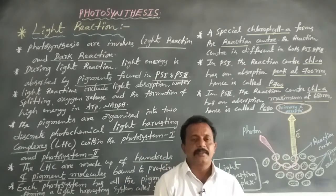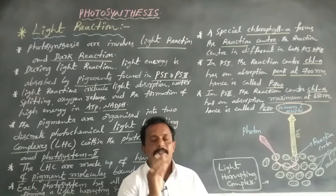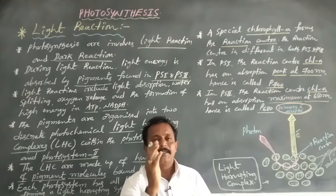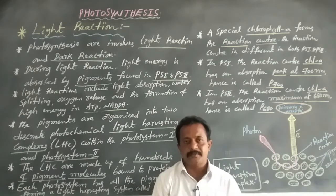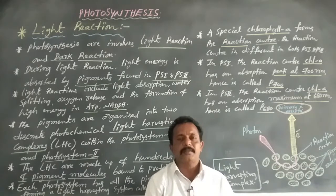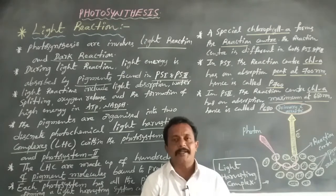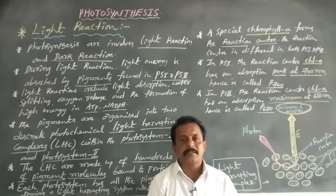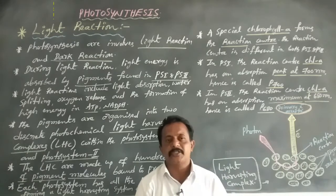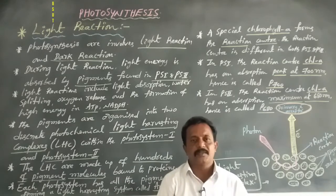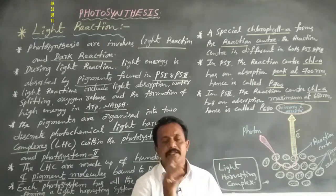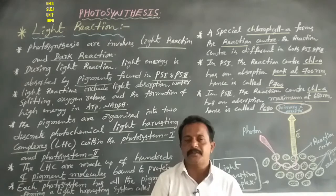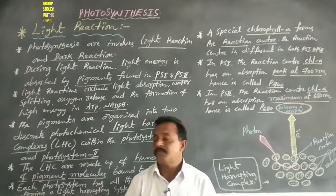Light reactions are directly light-driven. Dark reactions are not directly light-driven, but they depend on the products of light reactions such as ATP and NADPH. Light reactions take place in the grana or thylakoid membrane of chloroplasts, while dark reactions take place in the stroma of chloroplasts.